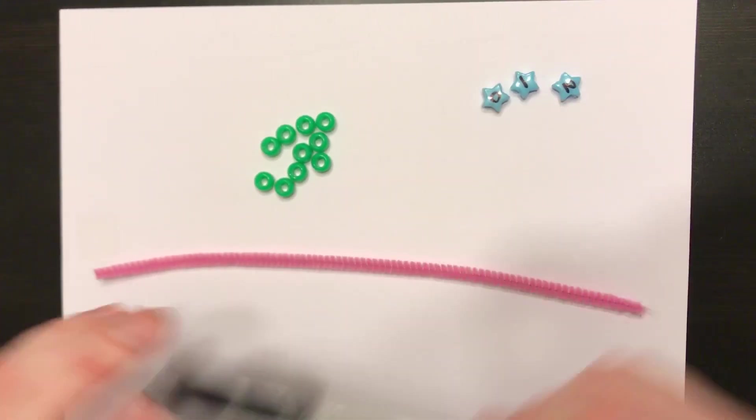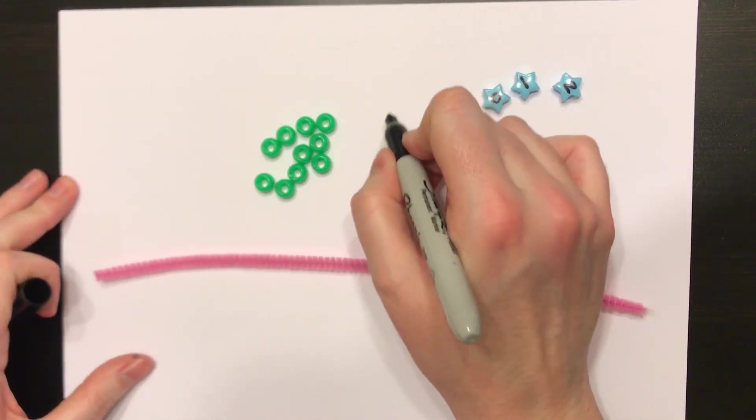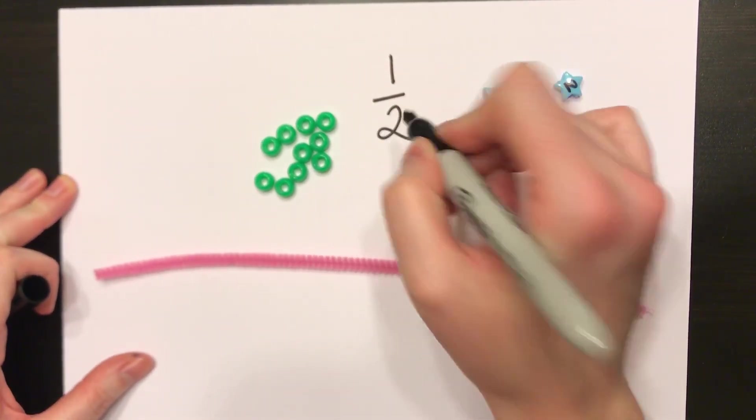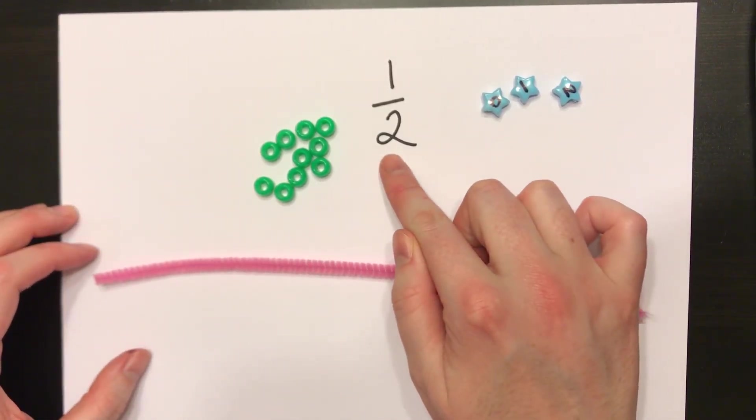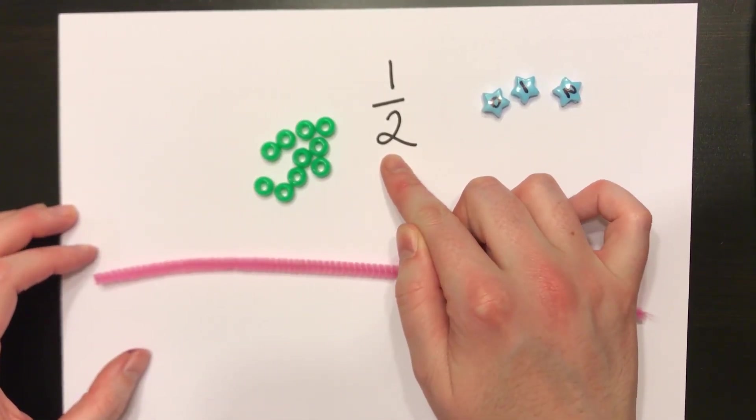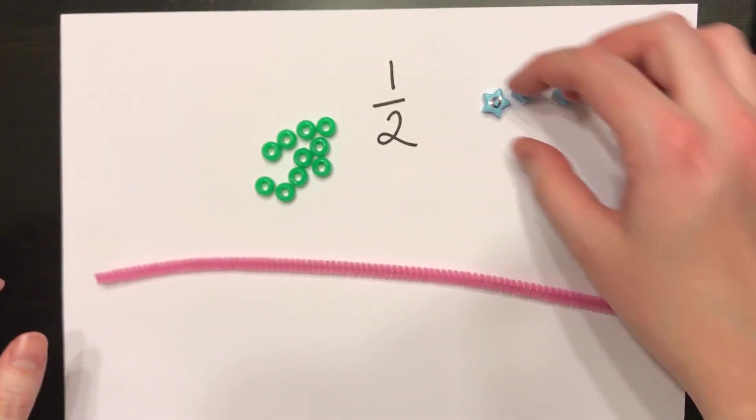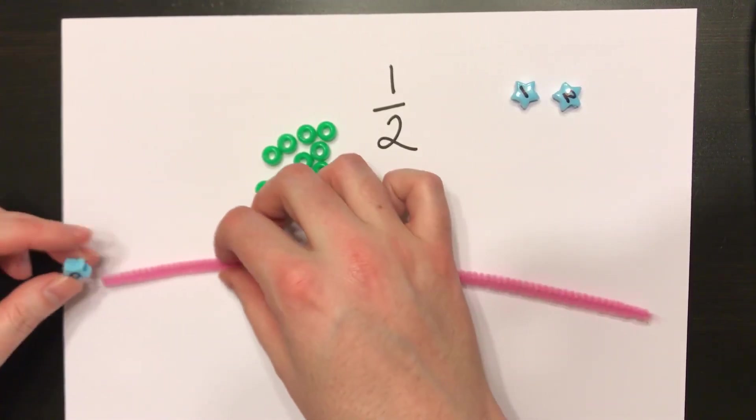So if I were to ask you how to show 1 half on a number line, you'd have to think to yourself, okay, 1 half, what do I know about it? The denominator 2 means I'm going to break it into two equal pieces. So let's work on breaking this into two equal pieces.